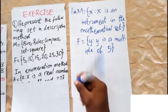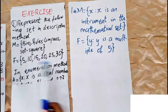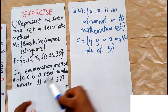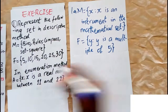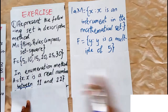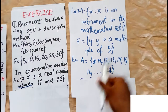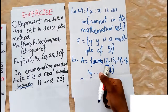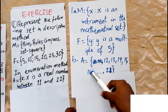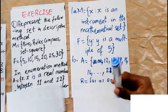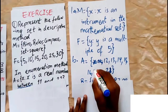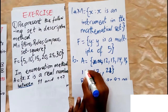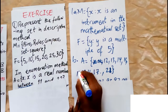The next part was to represent the following sets in enumeration method. We have set A: x such that x is a whole number between 11 and 22. The keyword here is 'between,' so we start from 12, not 11. We have 12, 13, 14, 15, 16, 17, 18, 19, 20.